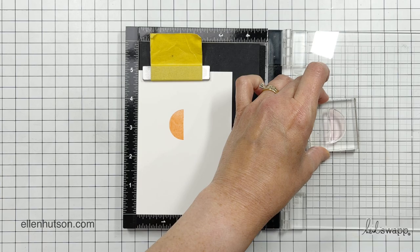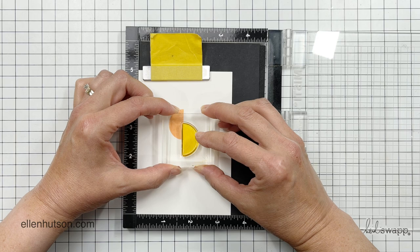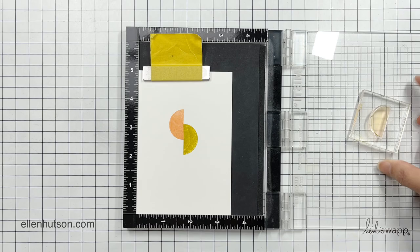And I'm inking up with Concord and 9th's water-based dye inks. I've got the whole collection in a box but I haven't played with them all that much, so I just chose a limited palette. I'm working with grapefruit, sorbet, and stardust, and then I'm also using just my favorite black ink as an accent color.